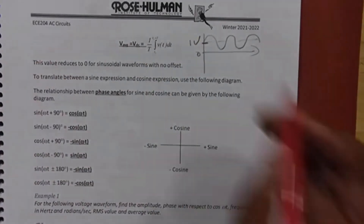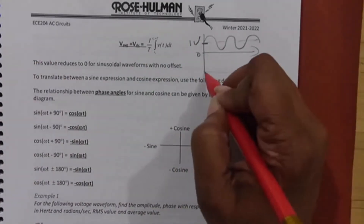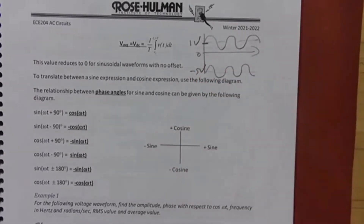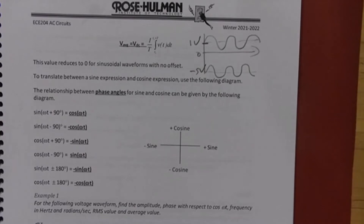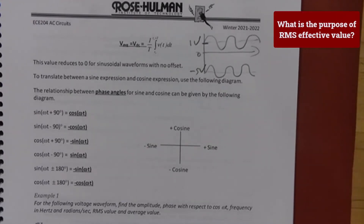If the sinusoid moves up by one volt, the DC value is one volt; if it's down at negative five, the DC value is negative five. You use offset in lab so the waves aren't on top of each other — you offset one so they're parallel instead of overlapping.